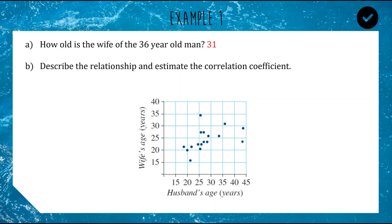Describe the relationship and estimate the correlation coefficient. There is a somewhat clear positive trend — it's not perfect though, because of these outliers and this scatter plot is not very consistent. If I was estimating, I'd say around 0.6.